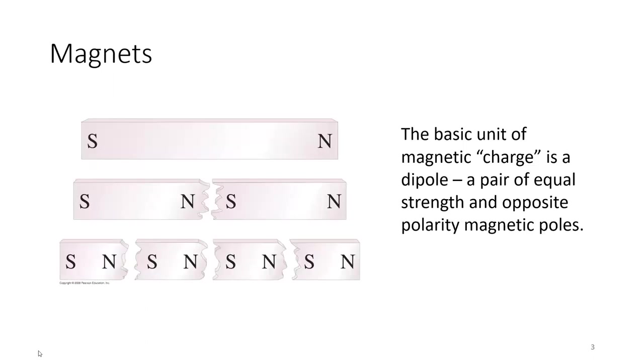First, before we even start, we should talk about magnets. The bar magnets we're going to use are labeled with a north and south end, and actually the basic unit of magnetic charge is a dipole, a pair of equal strength and opposite polarity magnetic poles. Different than the electric field, where we could just draw an electric field around a positive charge or a negative charge, we're always going to have these two poles together.